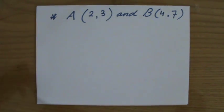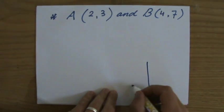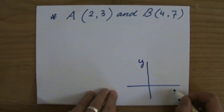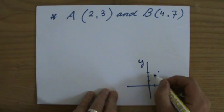Let's have a look. Let's sketch. Let's make a sketch. Y, x. A is 2,3. So 2,3. So that will be A.